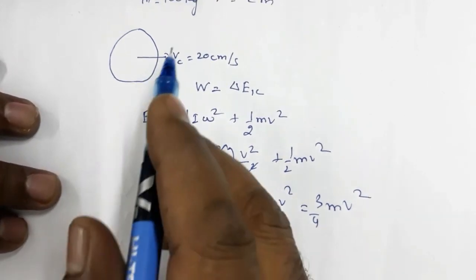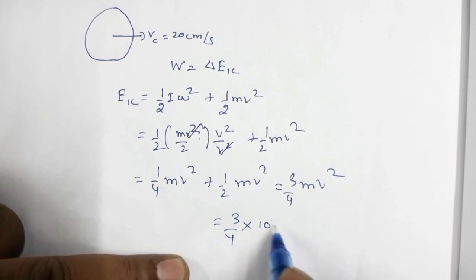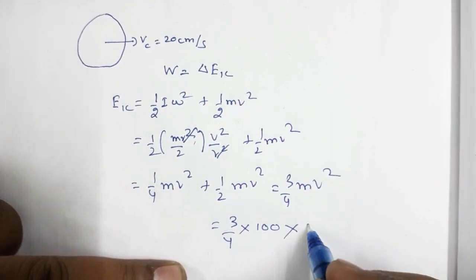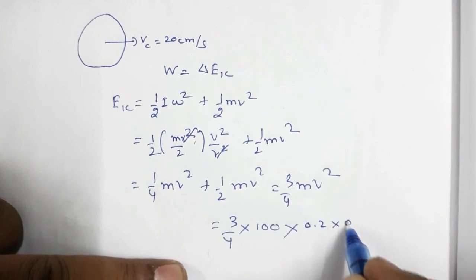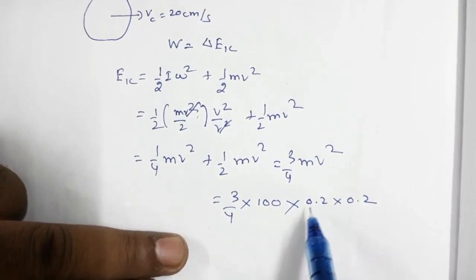Mass is 100 kg, so this is three by four into mass is 100 kg, and velocity of center of mass is 20 centimeters per second, so that is 0.2 into 0.2.